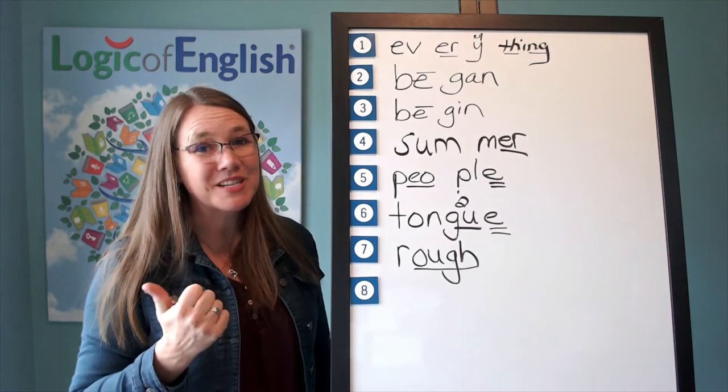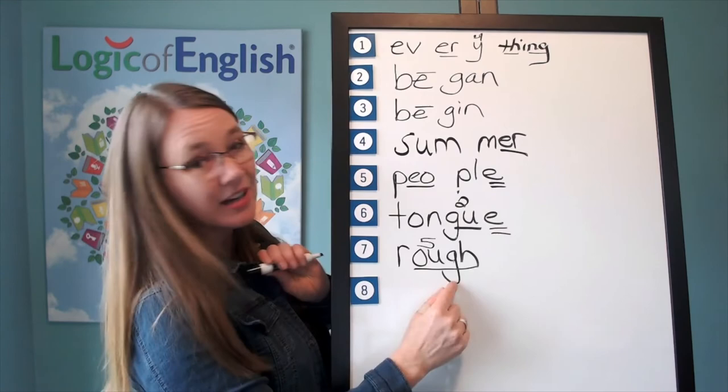And how will we mark it? We'll underline the uff. And what sound of ah, oh, oo, ow, off do we hear in rough? You're right. The fifth sound. Let's read it. Ur-uff. Rough.